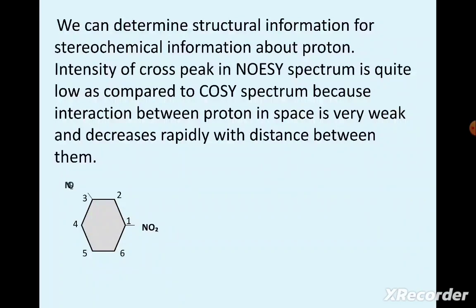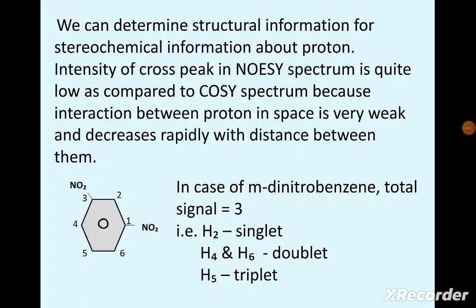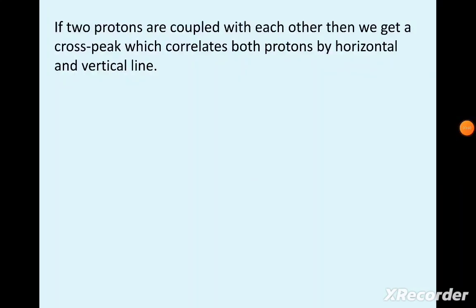Let us understand this with the help of an example of meta-dinitrobenzene. In the case of meta-dinitrobenzene, a total of three signals are obtained: H2 gives a singlet, H4 and H6 give a doublet, and H5 gives a triplet.